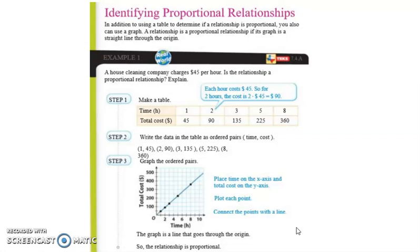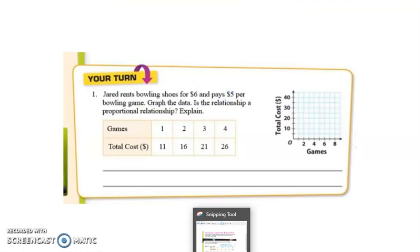So, we're going to go ahead and switch over to an example that I can explain. So, as you notice here in our example, we have Jared. He is renting bowling shoes for $6 and pays $5 per bowling game. We want to go ahead and graph the data. And now, is this relationship a proportional relationship? Is there a direct relationship between the amount of the bowling game and the amount of the cost? So, let's go ahead and analyze this.